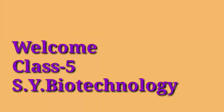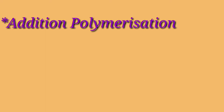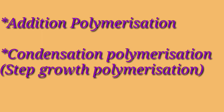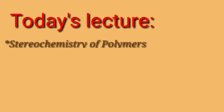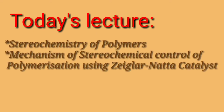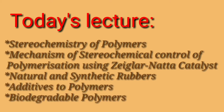Hello students, welcome to class 5. In our previous lecture, we discussed classification of polymers based on synthesis, and we saw that polymers on the basis of synthesis can be categorized into two important classes: addition polymerization and condensation polymerization. In today's lecture, we are going to discuss stereochemistry of polymers, along with mechanism of stereochemical control of polymerization using Ziegler-Natta catalyst, followed by natural and synthetic rubbers, additives to polymers, and biodegradable polymers. So let's get started.